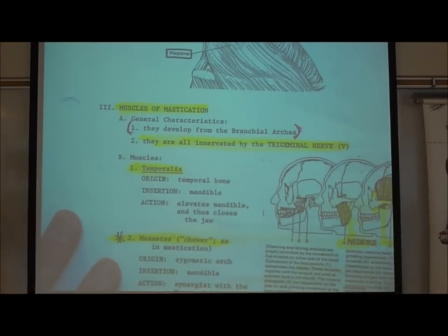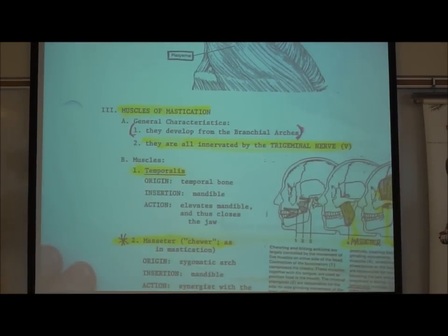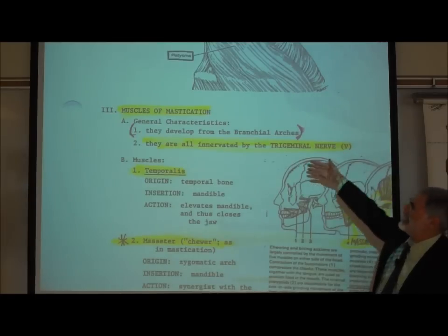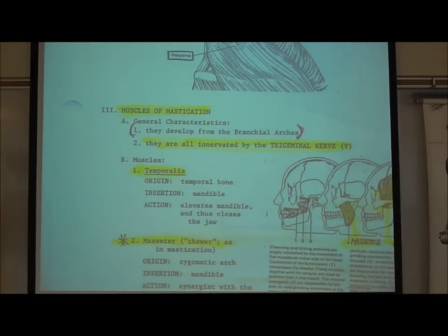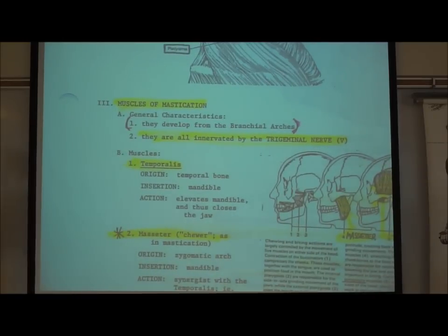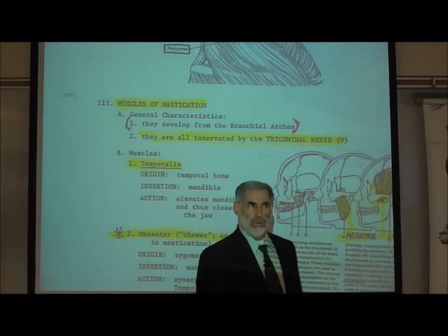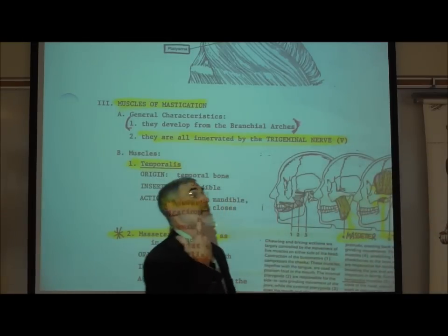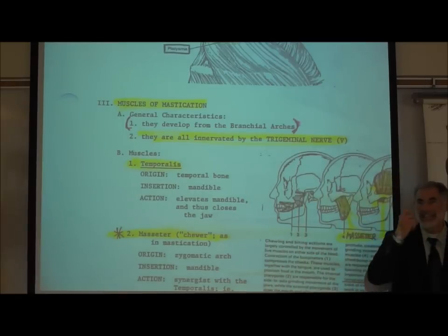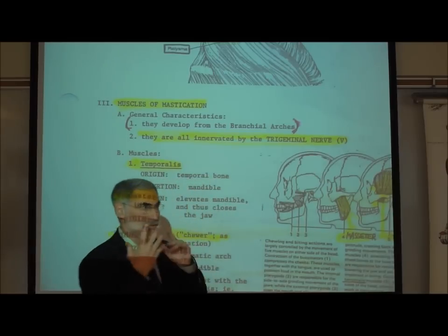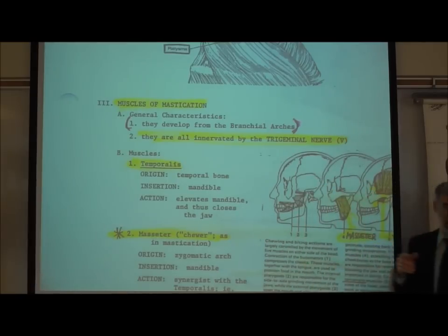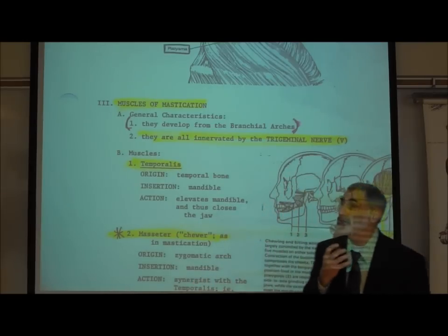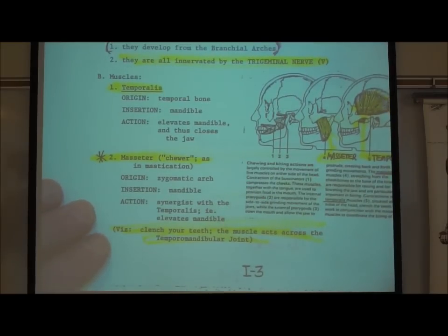On I3, the next thing listed is muscles of mastication. To masticate means to chew. I'm not going to test you on their embryologic origin. They are all controlled and activated by the trigeminal nerve. We mentioned that the trigeminal nerve is the most important nerve in dentistry — its branches are numbed with lidocaine injections to block the sensory part so you don't feel pain when drilling. But the trigeminal nerve also contains motor neurons for voluntary control of your chewing muscles.